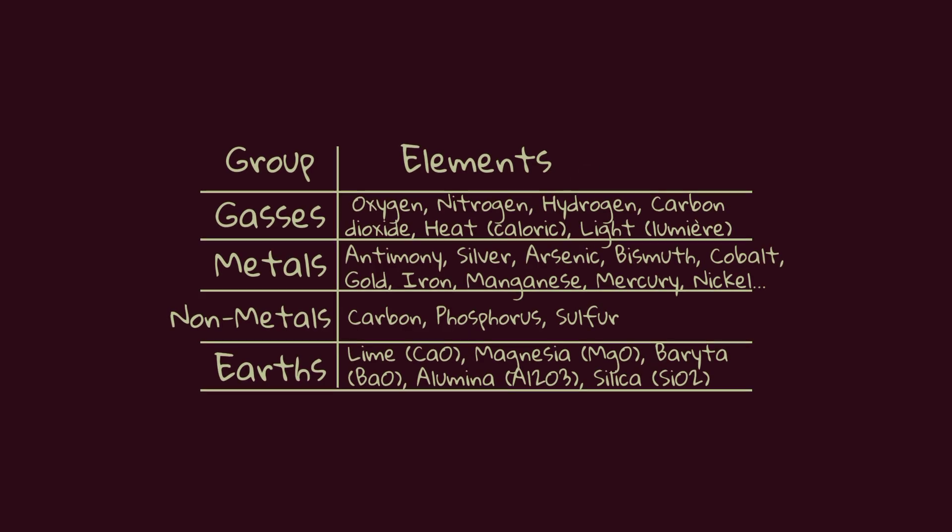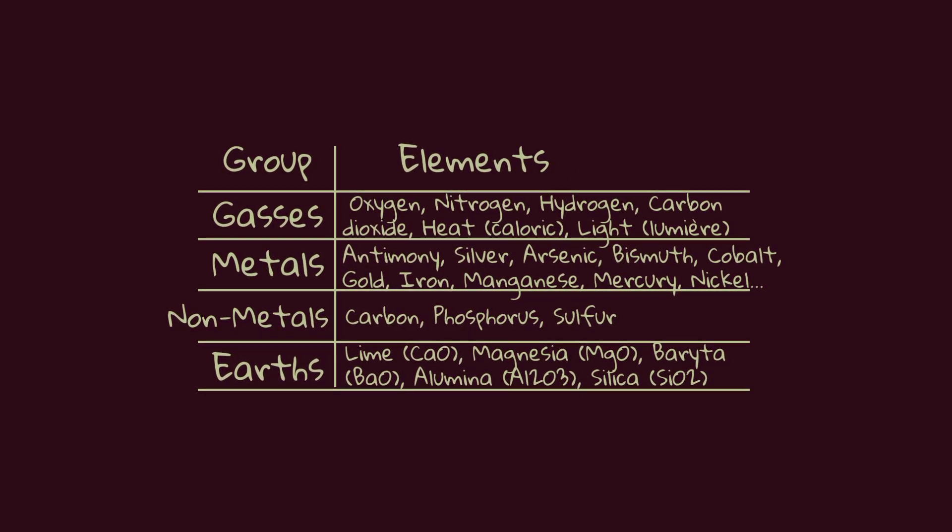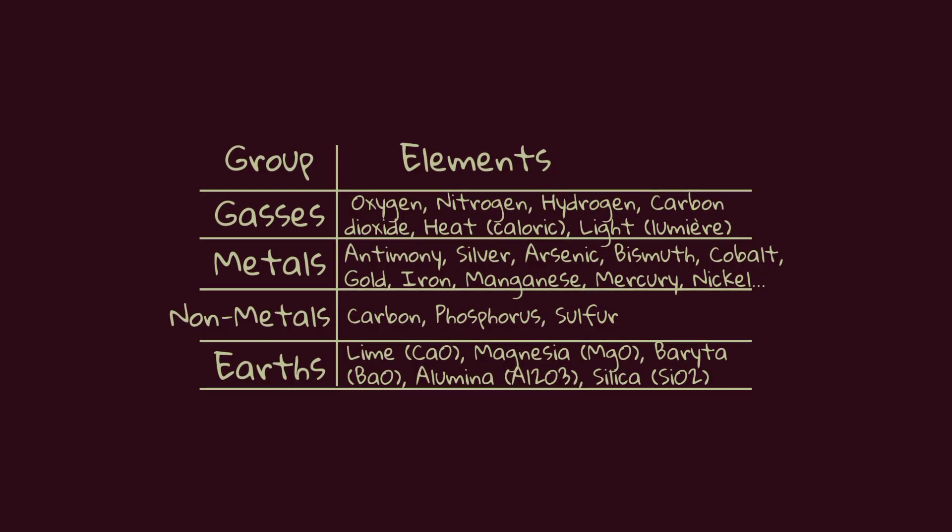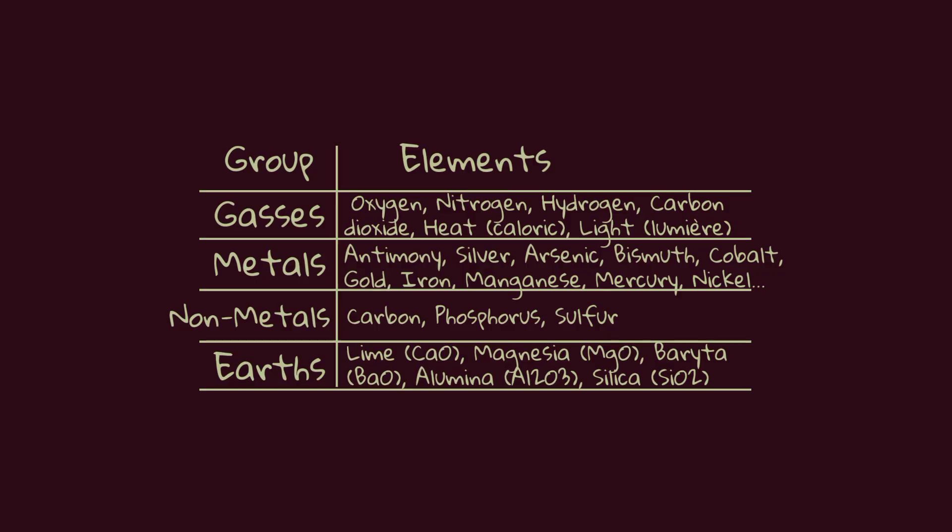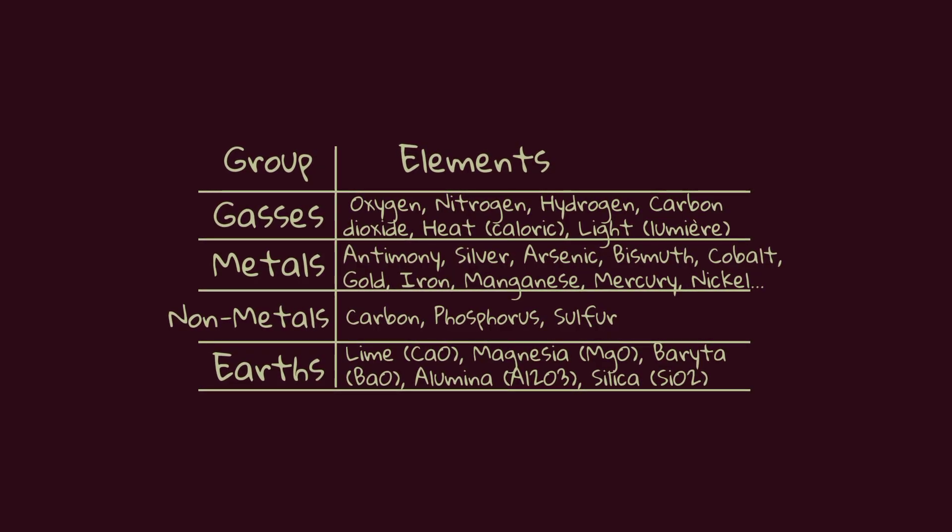Lavoisier also explained that combustion was actually the combination of substances with oxygen, disproving the old phlogiston theory. He classified substances as elements and compounds, and laid the foundations for the modern system of chemical nomenclature. Chemical reactions could now be expressed with mathematical equations, making chemistry a predictable and repeatable science.